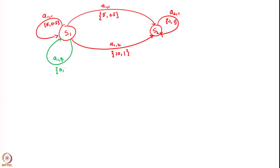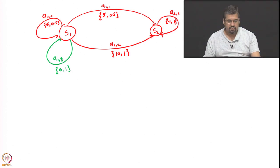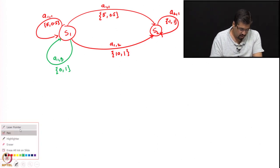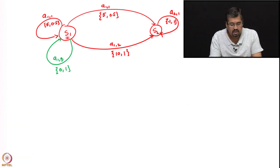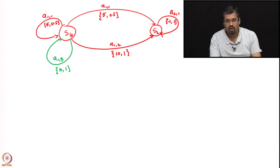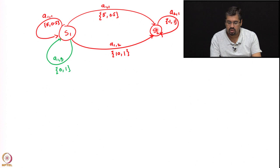a13 gives us a reward of 0 and with probability 1 it leads us back to state S1. As a result of this, notice that when you are in state S1, we cannot really conclude what the history of actions has been. We can conclude that if you are presently in state S1 you were earlier in state S1, because there is no way to reach S1 from S2.